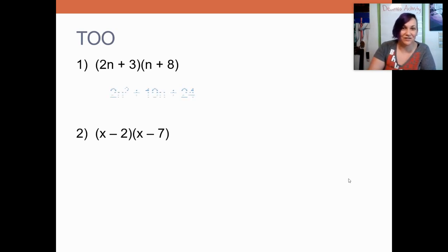All right. Let's check our answer for that first one. 2n squared plus 19n and then plus 24. On the diagonal, you should have gotten a 16 and a 3. 16 plus 3 is 19.